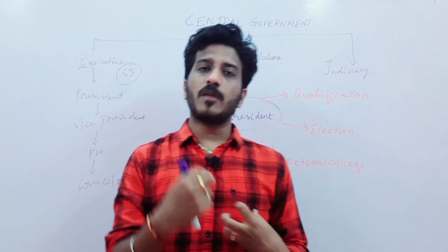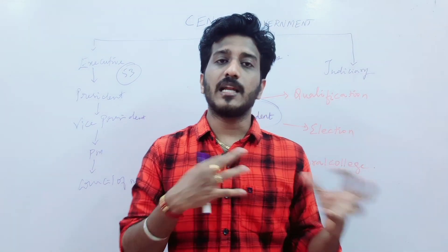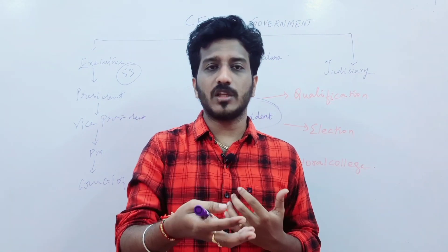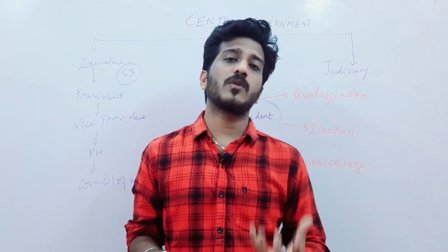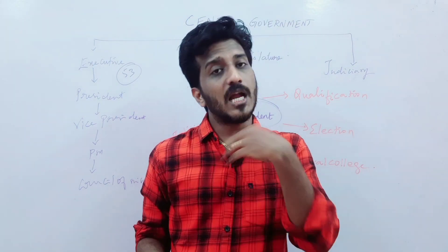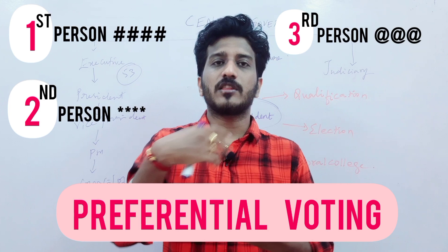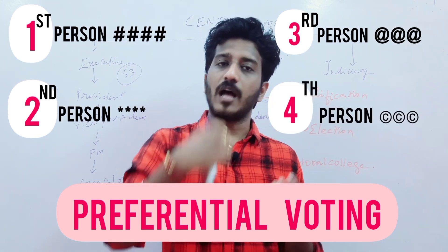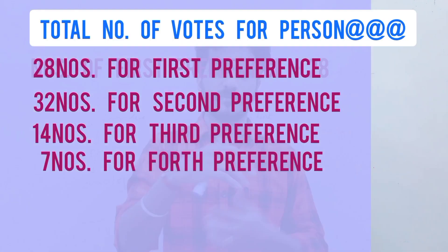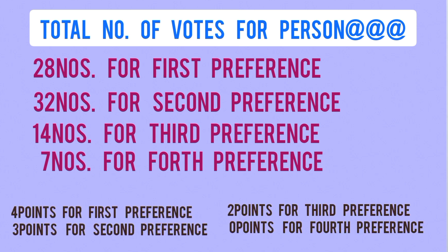In a normal election, if we have four candidates, under the single transferable vote system you can vote for all four candidates by ranking them — first, second, third, fourth. That means you give preferential votes. You number them one, two, three, four, and add up the points. This is the election process for single transferable vote.